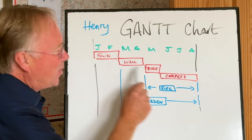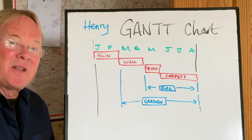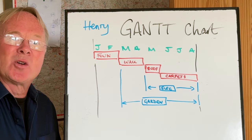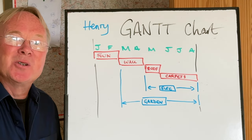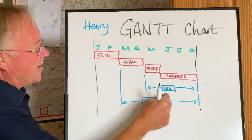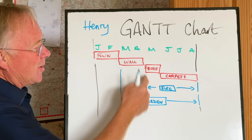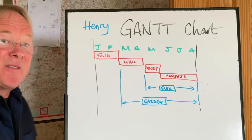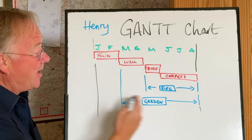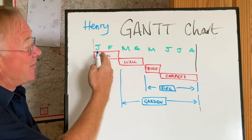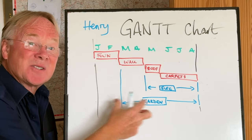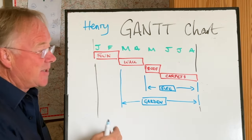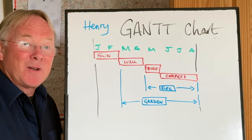You've got your critical path, and then you've got some floating tasks, where you've got a bit of choice about when you do them. So the electrical bit — as soon as we've got the walls in, we could do it anywhere in this space. And the garden, we could do any time after the foundation — so that's a floating task. You have critical tasks and you have floating tasks.